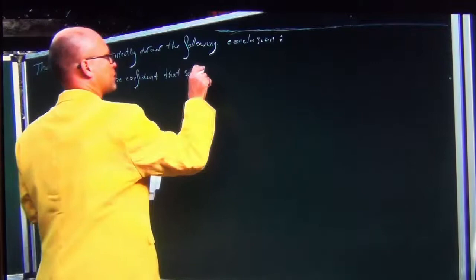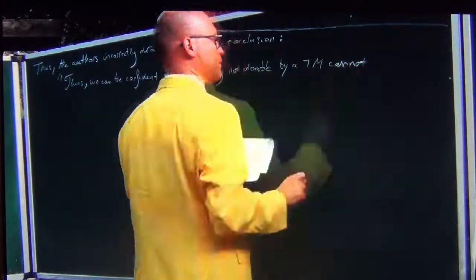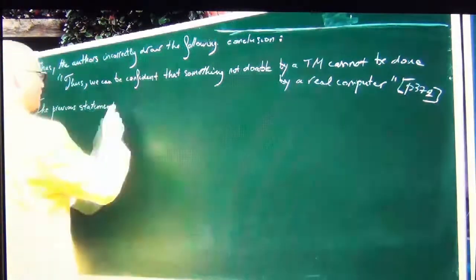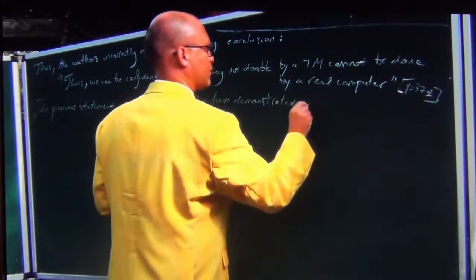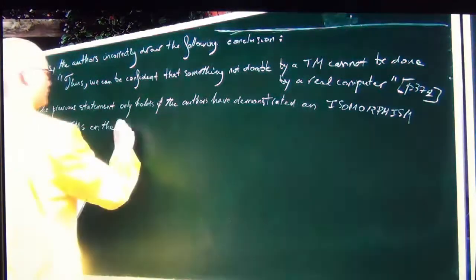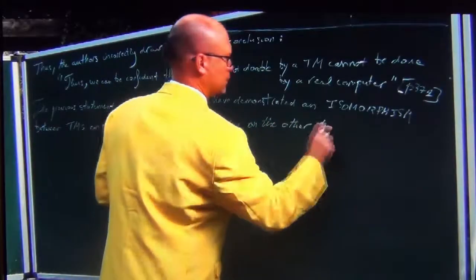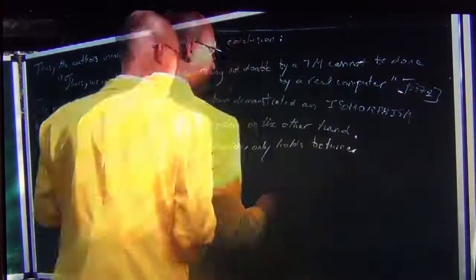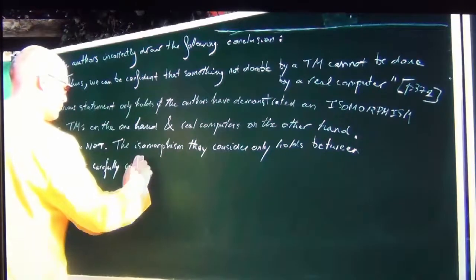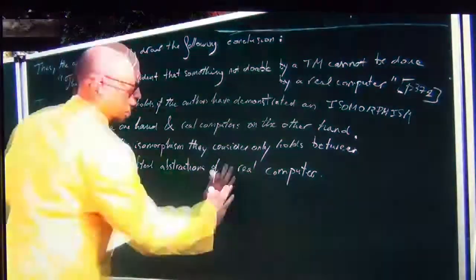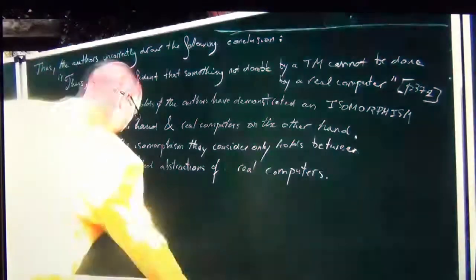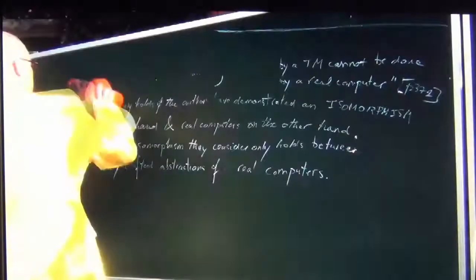Thus the authors incorrectly draw the following conclusion — I'm quoting: 'we can be confident that something not doable by a Turing machine cannot be done by a real computer.' This statement only holds if the authors have demonstrated an isomorphism between Turing machines and real physical computers. But they have not done so. The isomorphism they consider only holds between Turing machines and their carefully crafted abstraction of real computers. So basically they're saying real computers are Turing Universal because we say they are — that's what it all boils down to.